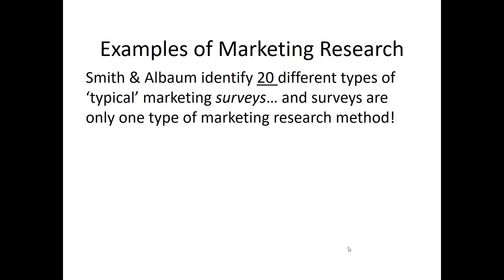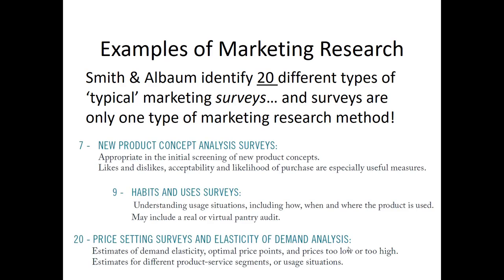If you look at your textbook, or if you just Google Smith and Albom, some of the founders of Qualtrics, you'll see that they categorize surveys, one of the most common types of marketing research, into 20 different typologies. In other words, the point they're trying to make here is that marketing problems that we solve with research are so common, you can look at any given survey and categorize it into one of 20 different categories. We're not going to cover all of those categories here, but to illustrate what they mean, let's take a look at these three.